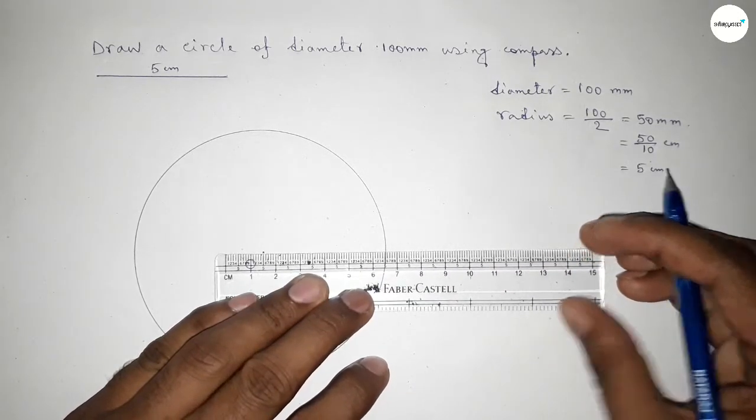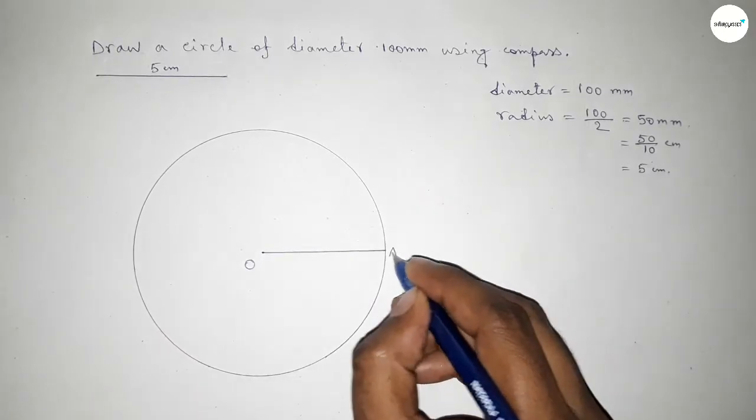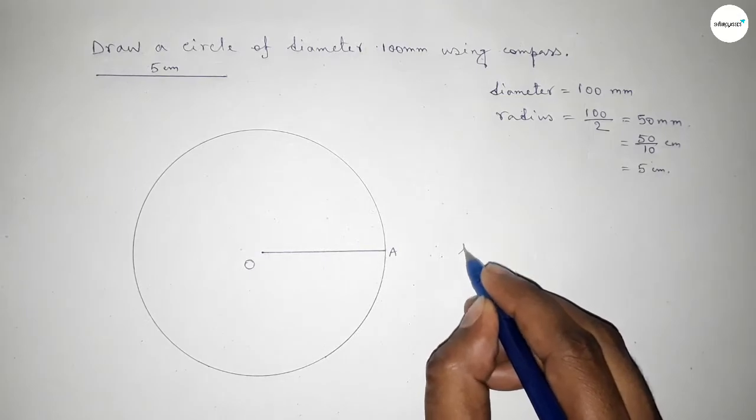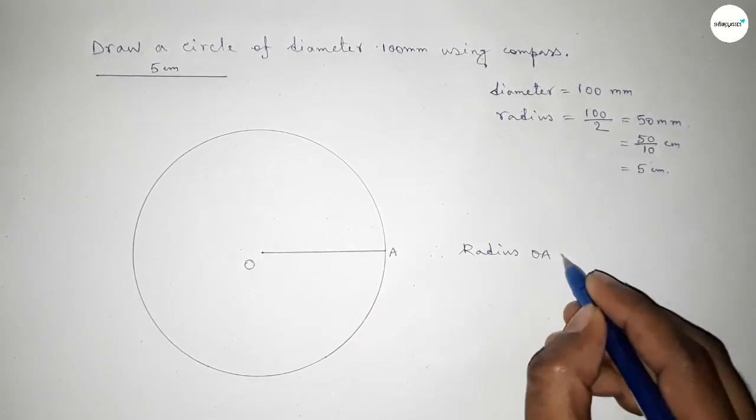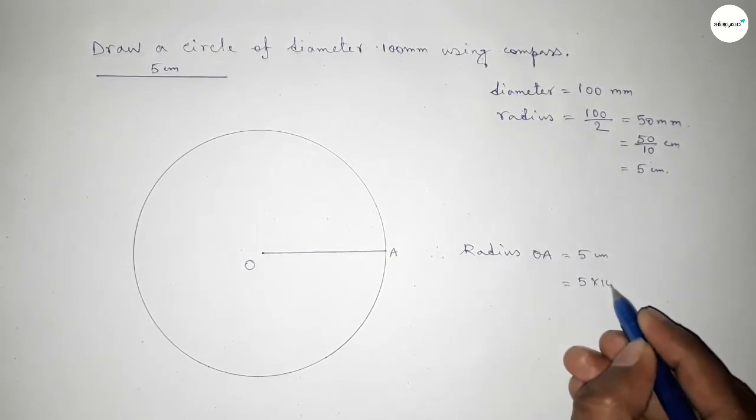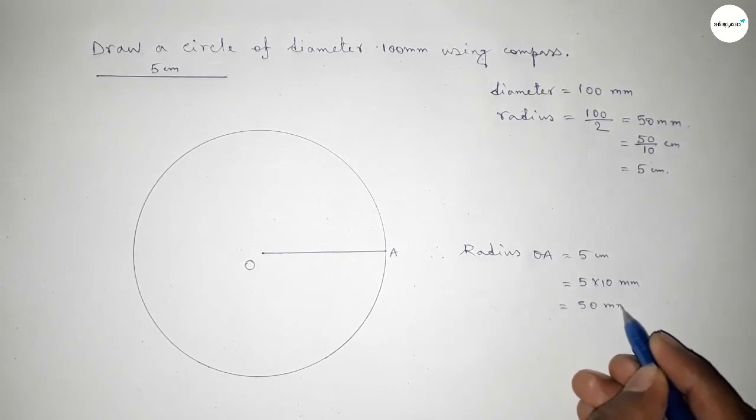Joining this line, this is the radius of this circle. Taking here point A, so therefore radius OA equals 5 centimeter. Converting into millimeter by multiplying by 10, so this is 50 millimeter.